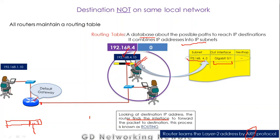This is how a packet is sent from the source node to the destination node using IP addresses. I hope you now have some idea of how IP addresses are used to forward packets from one node to the destination. This was the case where the destination node is directly connected with the default gateway. In our next video, we will discuss what happens when the destination is not directly connected with any interface of the default gateway, but there are intermediate routers involved. Thank you very much.